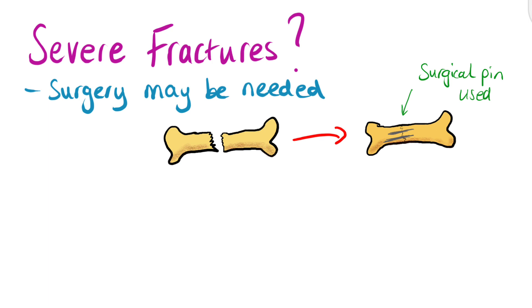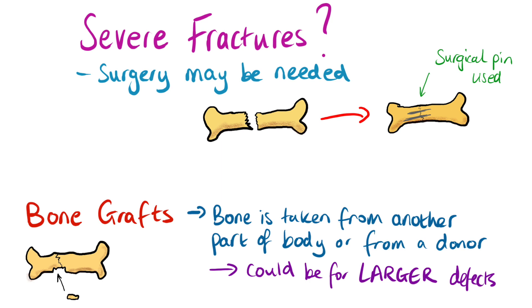In cases of severe fractures, surgical procedures may be necessary to align bone fragments and stabilise the fracture site. Bone grafts, which involve transplanting bone tissue from one part of the body or a donor source, can aid the healing of extensive bone defects. In some cases, orthopaedic devices like pins, screws and plates may be required to support bone healing.